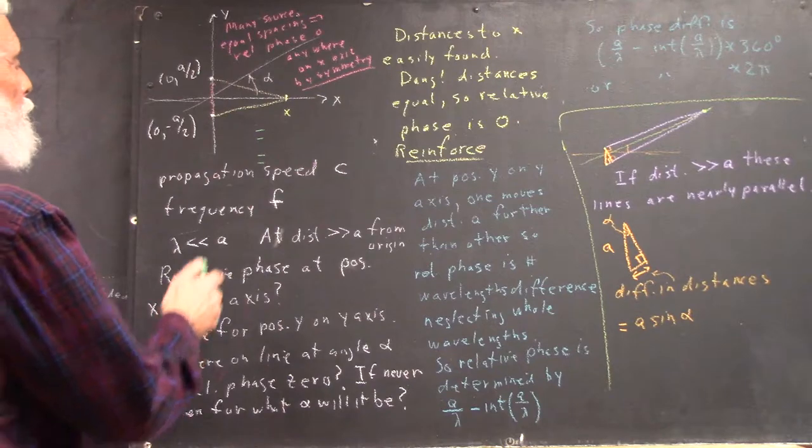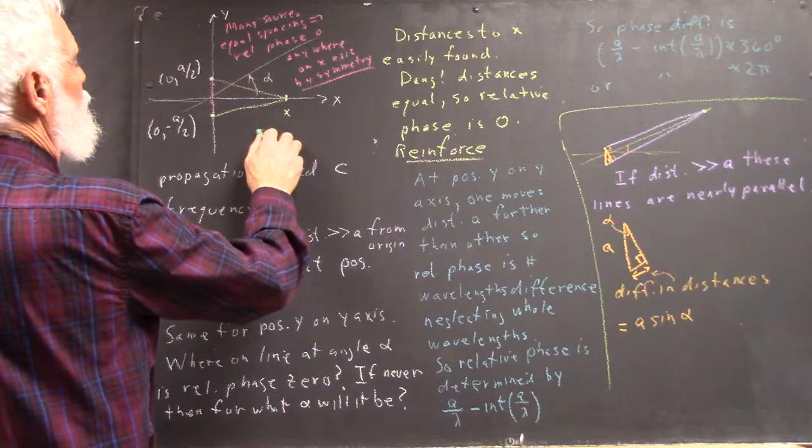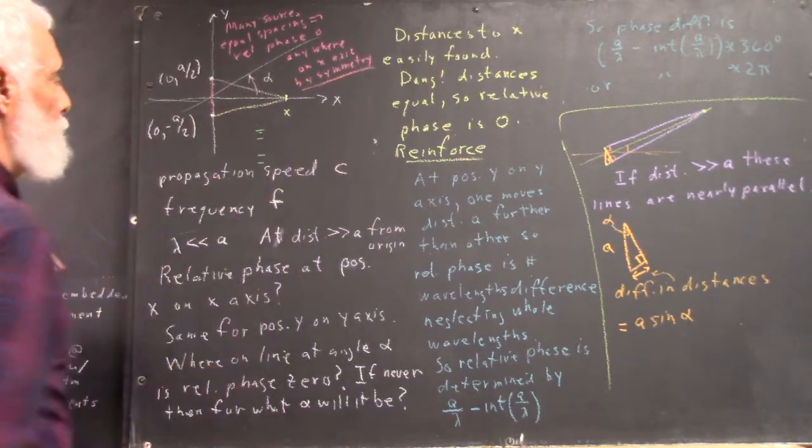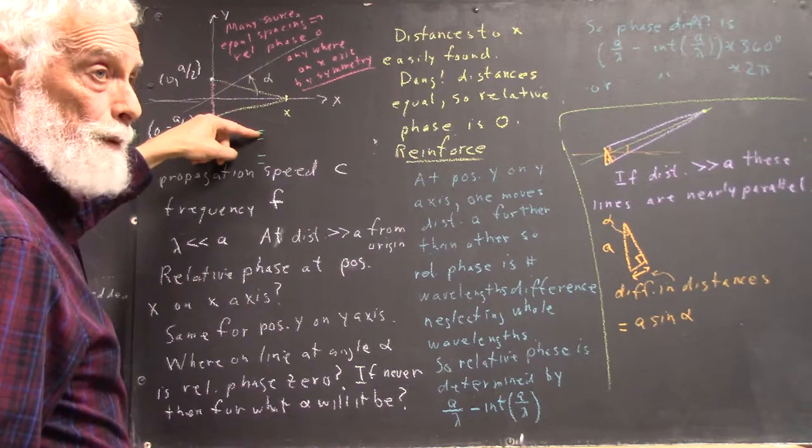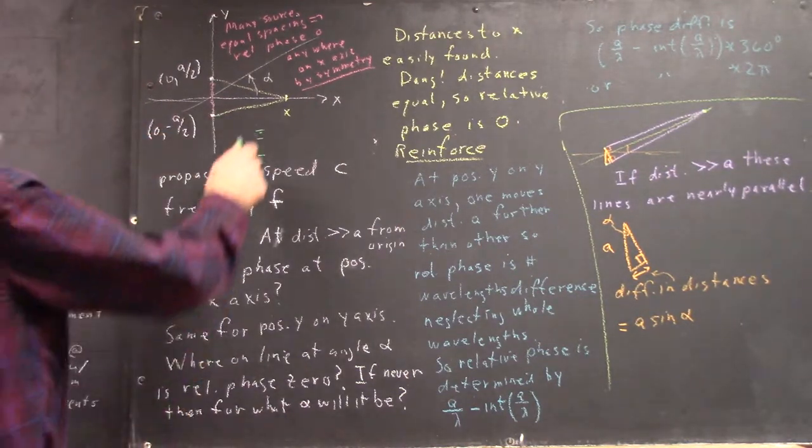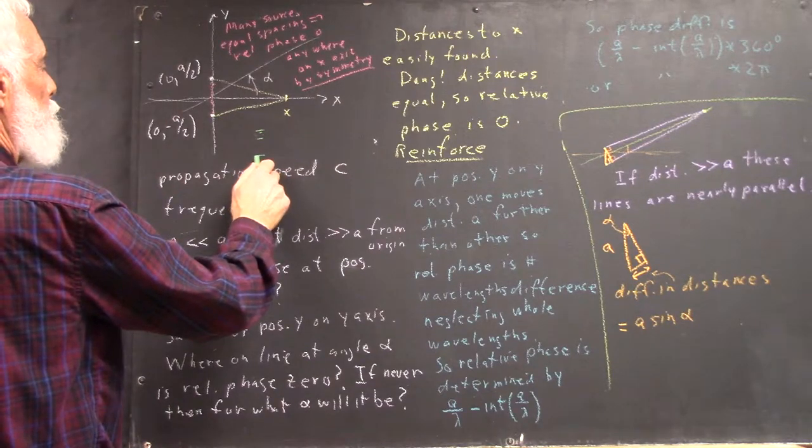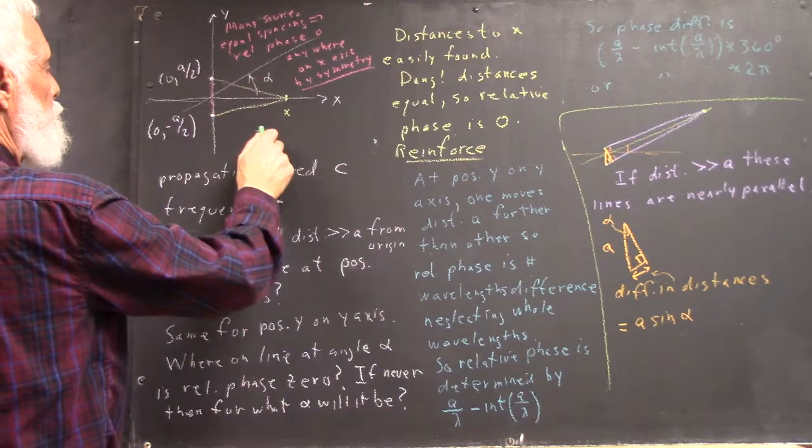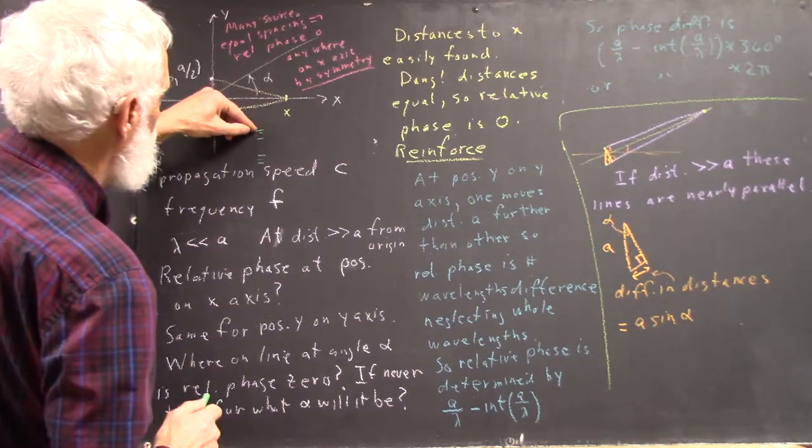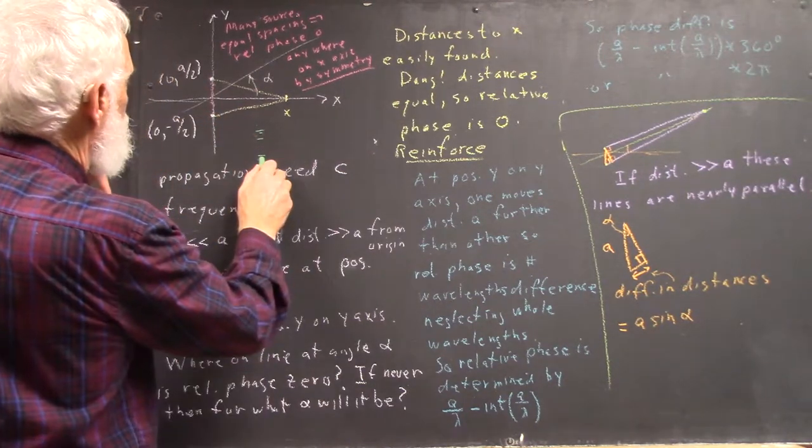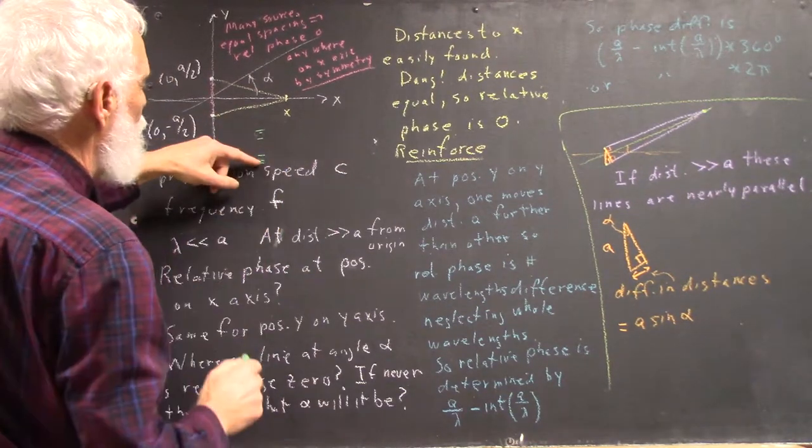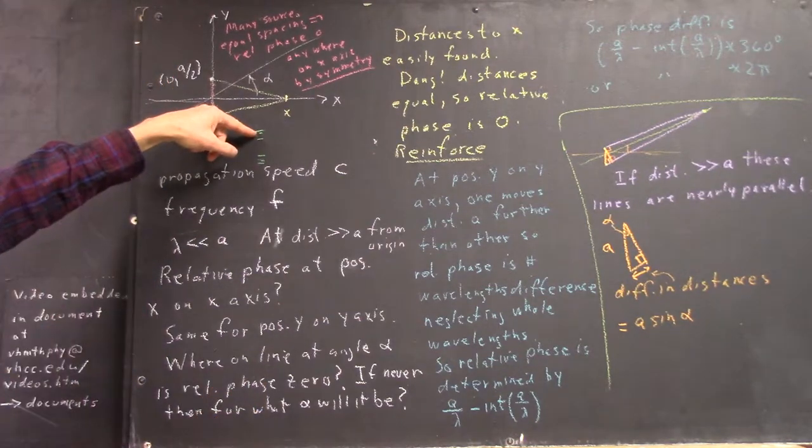Which means that any point here can be matched by a point down here that's 180 degrees out of phase with it. You go to the midpoint, and then whatever the distance is between here and here, you go that distance below the midpoint and this thing will be 180 degrees out of phase with this one.